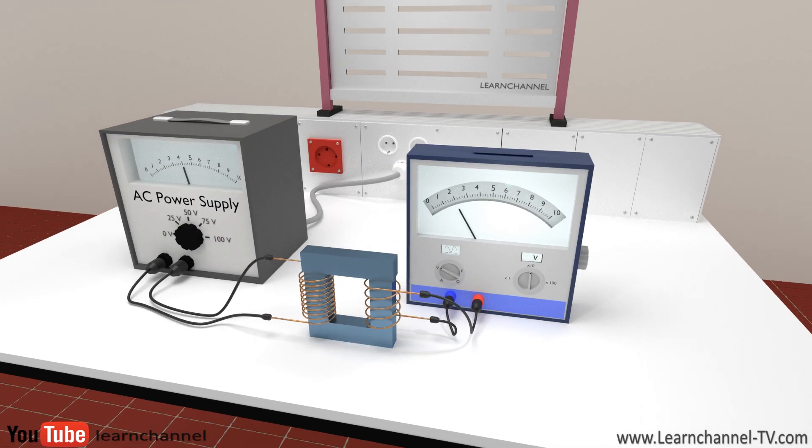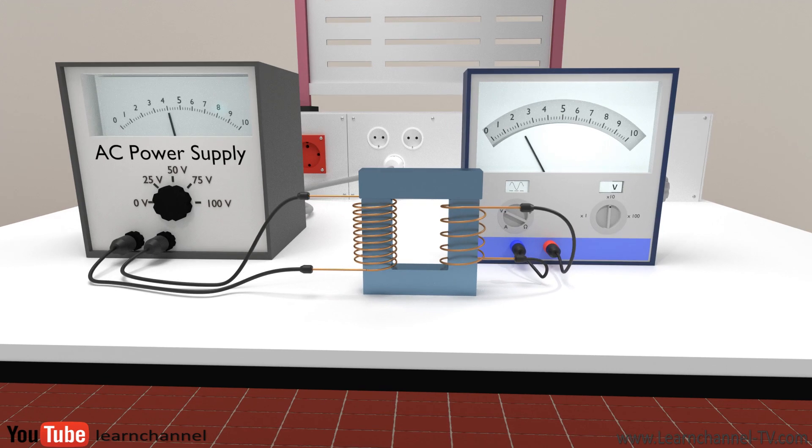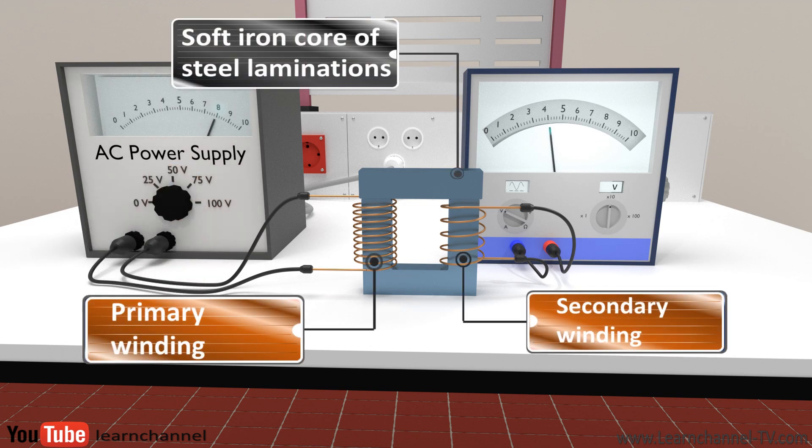Even if the transformer has no moving parts, it can be called a machine. More precisely, a static machine. Our transformer here converts a high input voltage to a low output voltage, as you see. But how so?